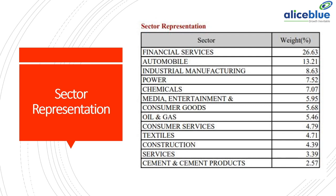The sector representation includes financial sectors at around 26%, auto and oil at 13%, and industrial manufacturing at 8%. You can also see representation from power, chemical, media, consumer goods, oil goods, consumer services, textile, construction services, and the cement industry. It is a very diversified index available from the mid-cap category to trade in the F&O segment from the 24th of this month, with representation from all sectors of the economy.